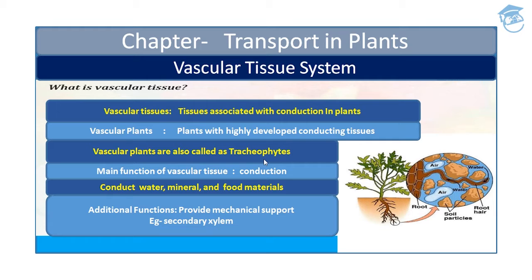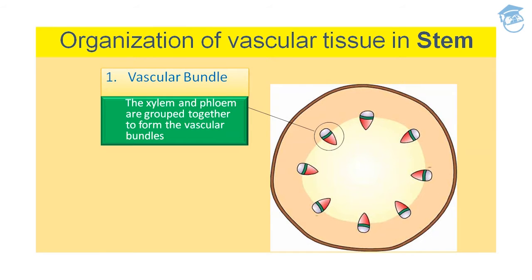The additional function of the vascular tissue system is to provide mechanical support. For example, secondary xylem increases the girth of a plant body. Secondary xylem has already been covered in the chapter 'Anatomy of the Flowering Plant' — you can refer to that presentation for better understanding.